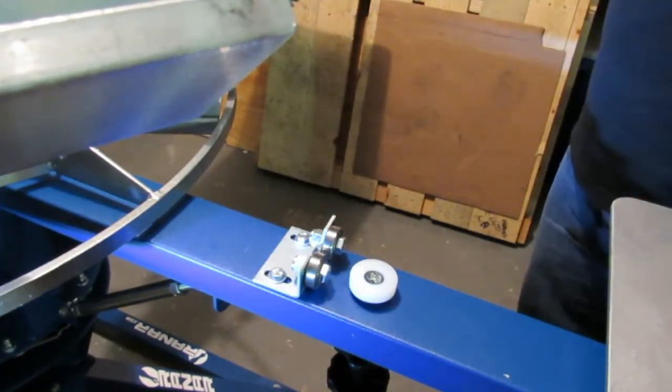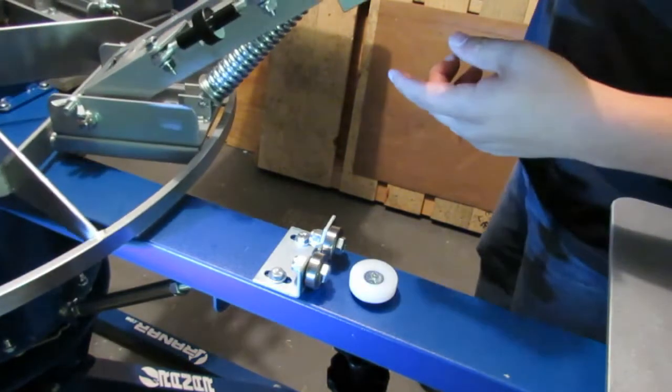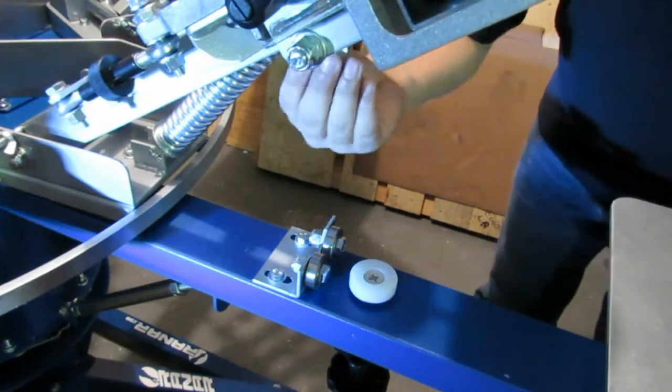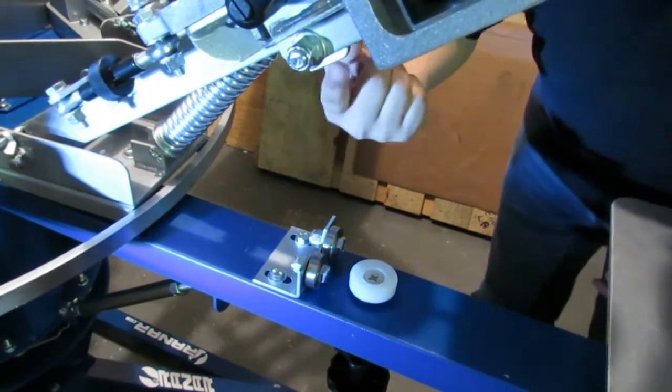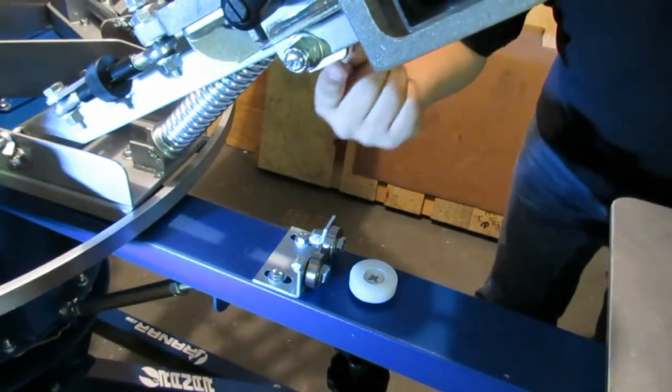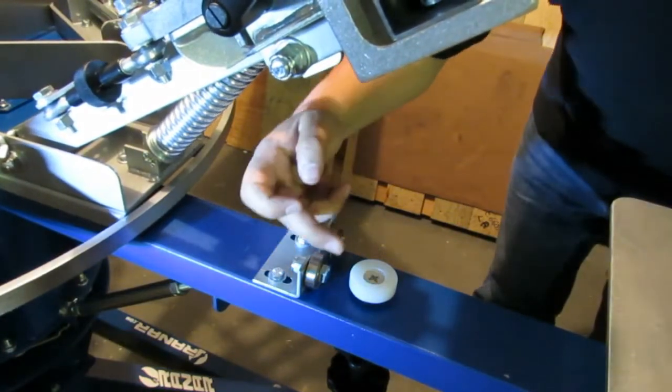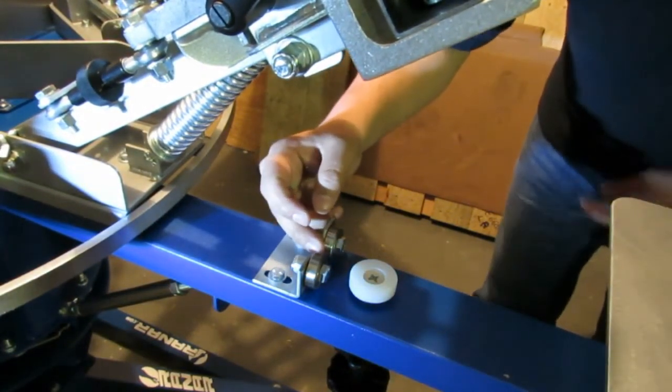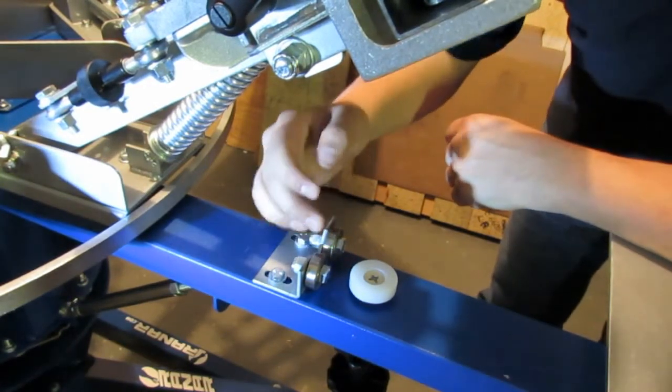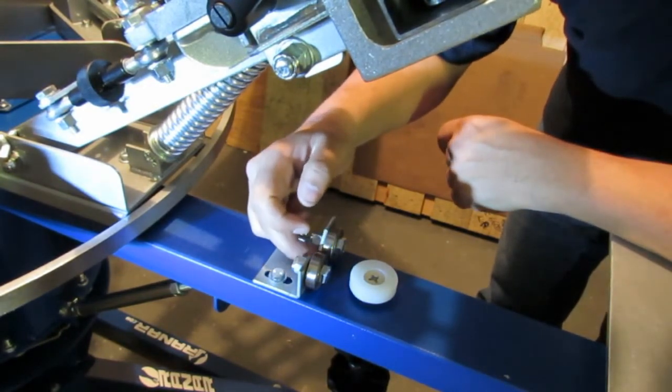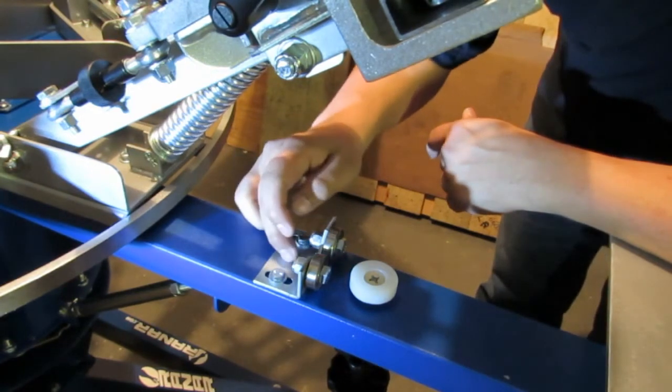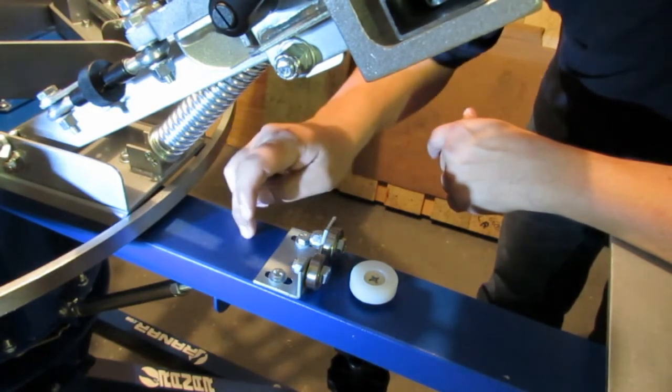So now we're going to put the printhead down and we're going to make sure that the key—I'm not sure if you can see the key right here—the key goes right in between the roller bearings. Okay, so you want to make sure that the key freely slides through the roller bearings.